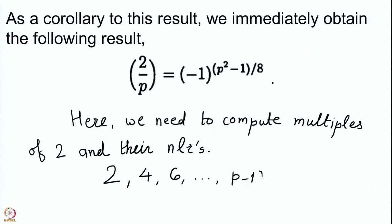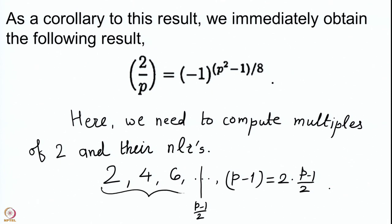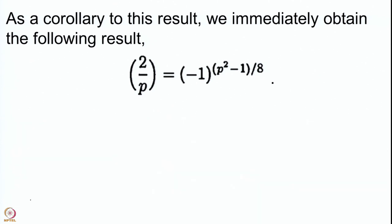The multiples of 2 are 2, 4, 6, and so on, up to 2·(p-1)/2, so the final number is p-1. These are the (p-1)/2 numbers we are going to see, and somewhere in between we get p-1/2. What we need to do is count how many of these multiples are less than (p-1)/2 and how many go beyond (p-1)/2. This computation will give us the Legendre symbol (2/p) using Gauss Lemma.